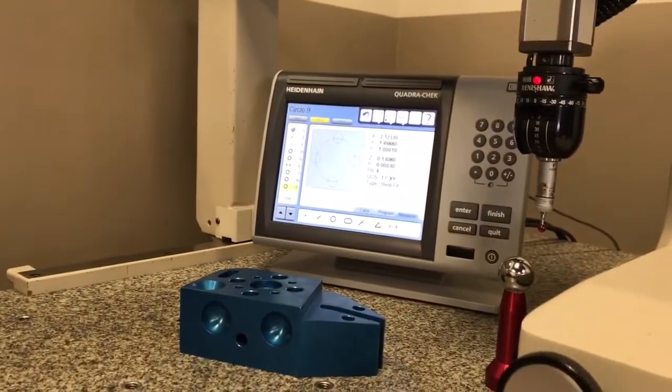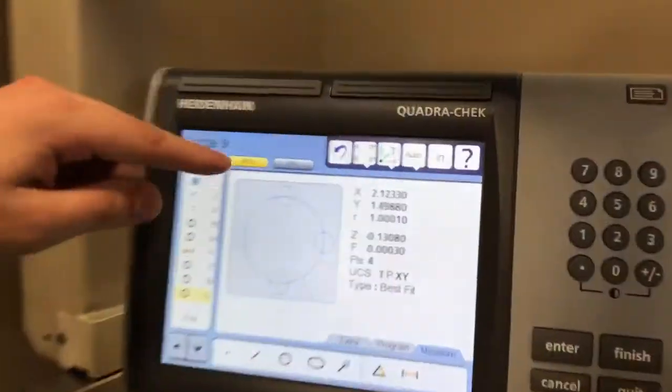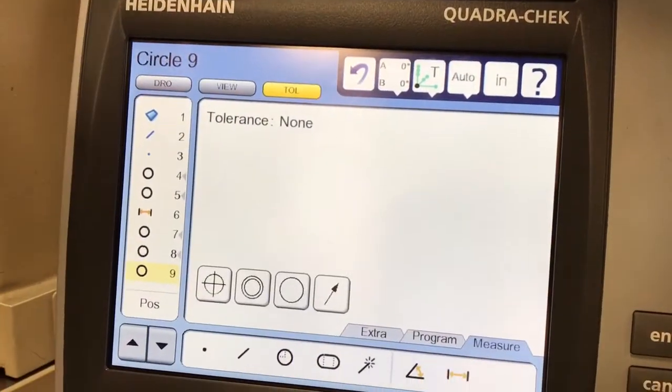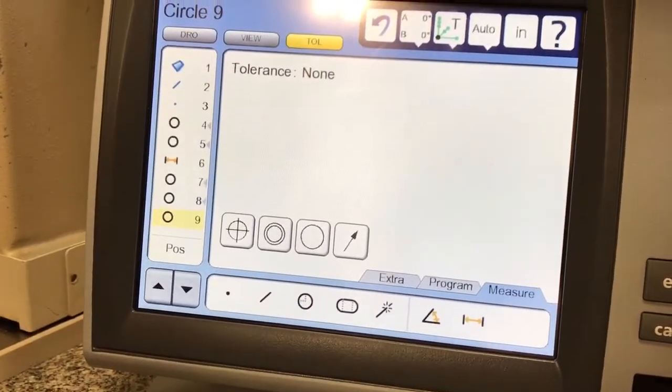Now if I want to do any tolerance thing on this circle, you can click on this button right here. Right now the default says none. Let's do true position.